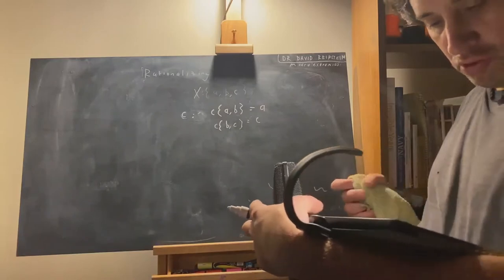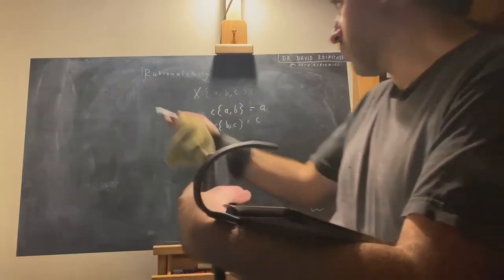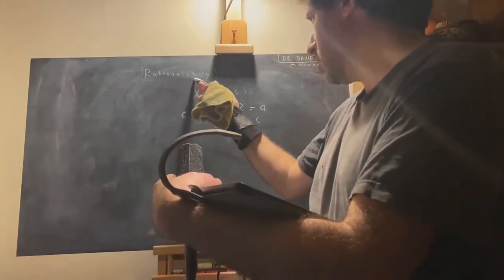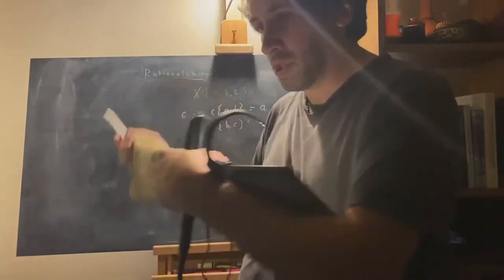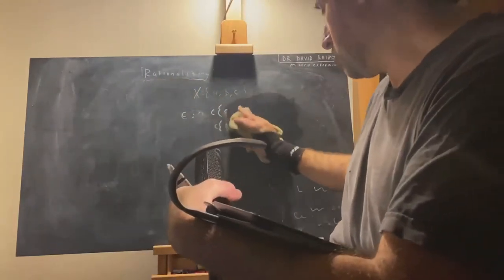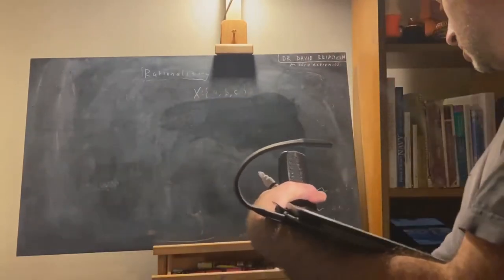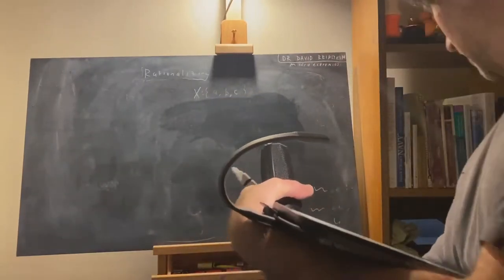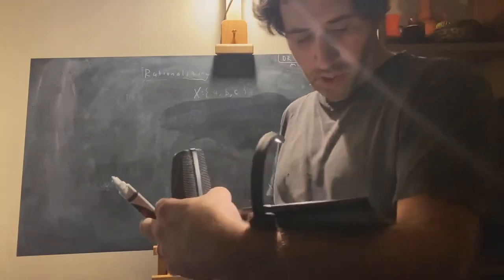Now, some of these choice functions will be something that we call rationalizable. We're talking about rationalizing a choice function. Some of these choice functions will not be rationalizable. What then is it to be rationalizable?